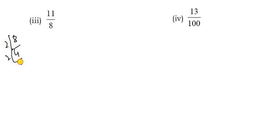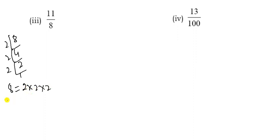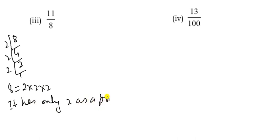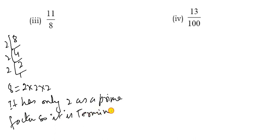Next, the denominator is 8. Factorising: 8 = 2 × 2 × 2. It has only 2 as a prime factor, so it is a terminating decimal.